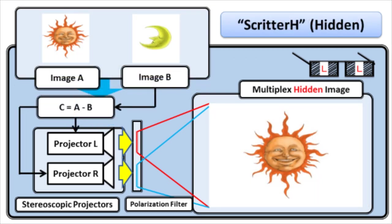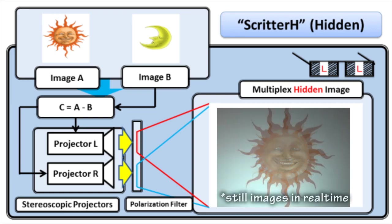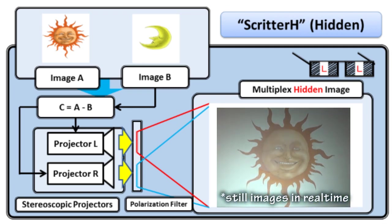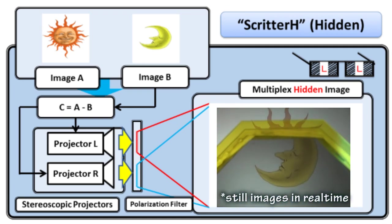Skritter uses two projectors to compose a naked eye image (image A) through the polarized projection of a hidden image (image B) and its difference with the naked eye image (image C) onto a screen. Image A is visible with the naked eye, while image B is visible only to users wearing polarized glasses.